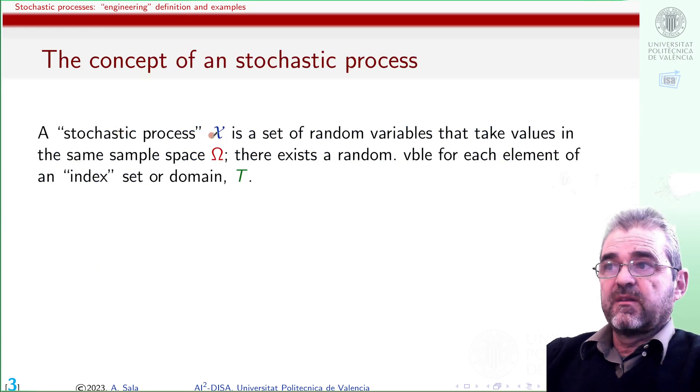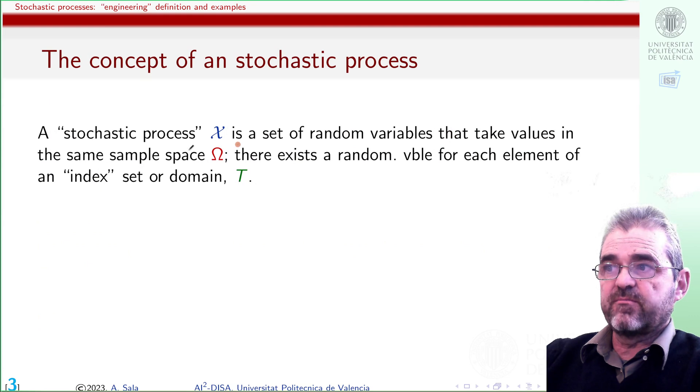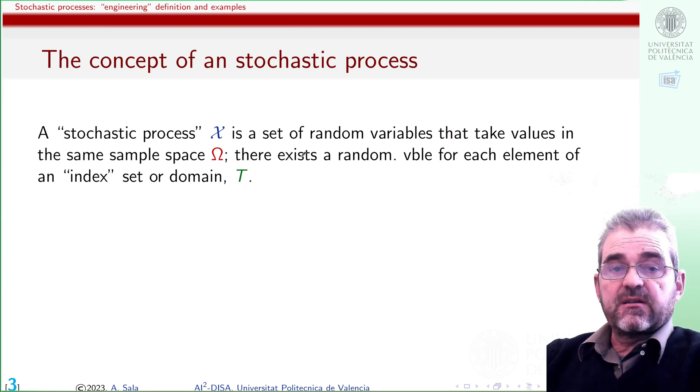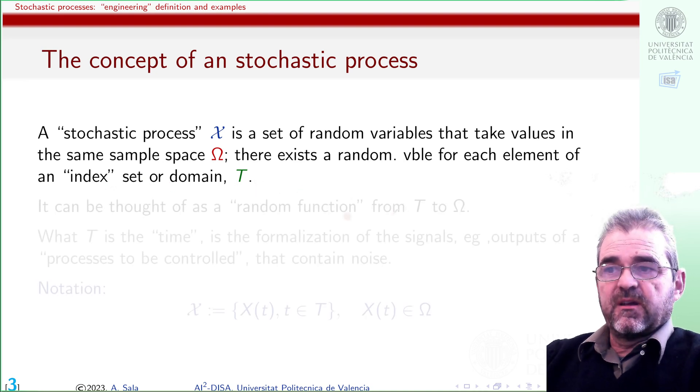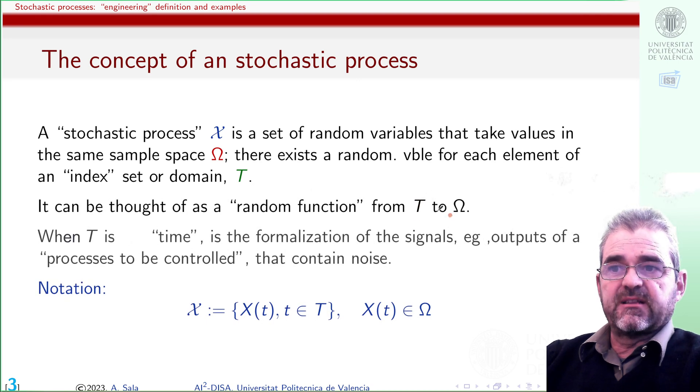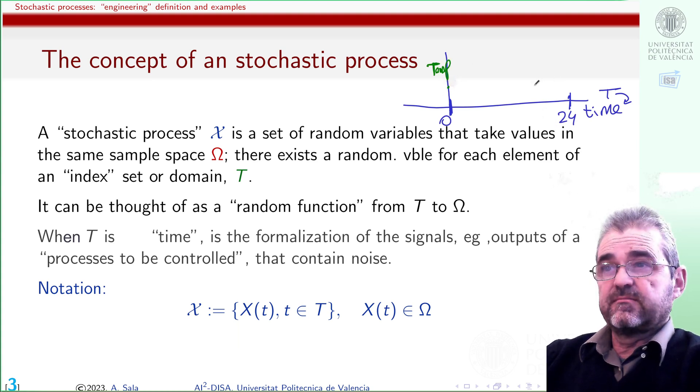In an abstract definition, a stochastic process is a set of random variables that take values in some sample space omega, and that set is somehow ordered because there is an index set capital T. In other terms, it's a sort of random function from capital T to omega. For instance, we may understand capital T as an interval of time between 0 and 24 hours, and the stochastic process can be a temperature reading every minute.